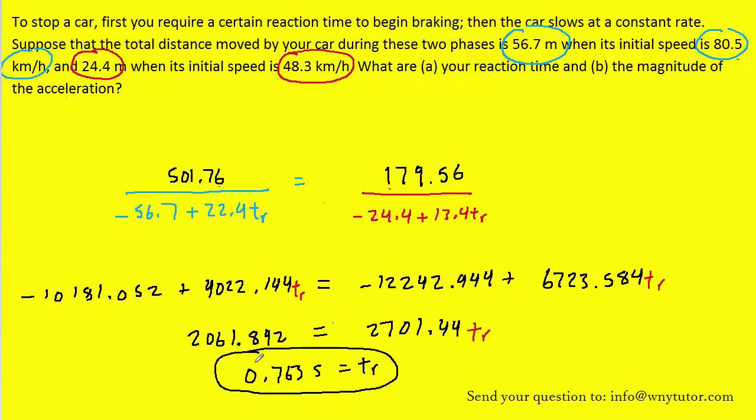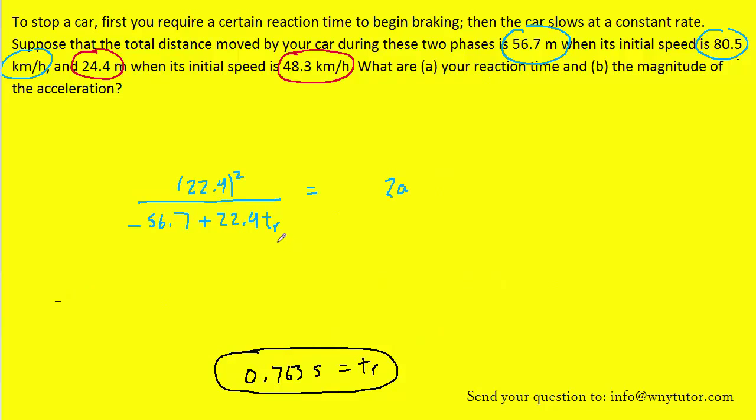Part b is going to be really easy now because we had a nice equation that we can use to solve for the acceleration. Let's bring that back into the picture. Here's the blue equation from before. This is actually solved in terms of 2a. So all we have to do is multiply both sides by a half. When we do that on the left side, just make sure to put that in parentheses, and this half and this 2 will cancel out. Then finally, when you take this reaction time that we just found and plug it in right there into the denominator and process all that on your calculator, you're going to easily solve for the acceleration. You should get approximately negative 6.33 meters per second squared for the acceleration.